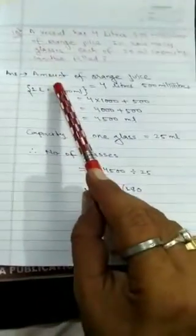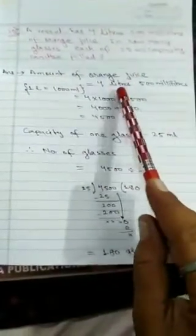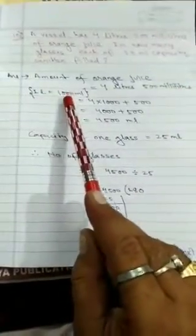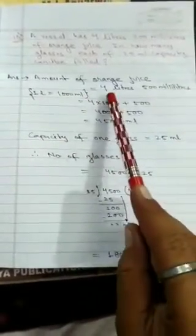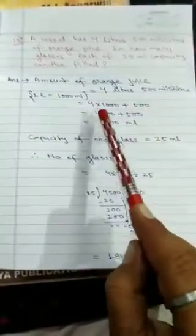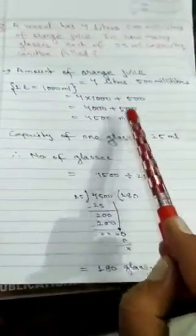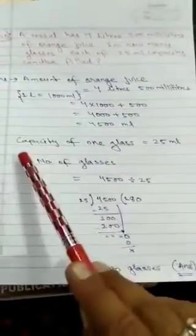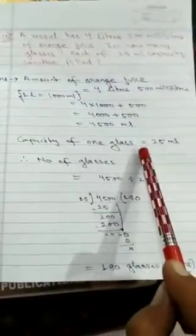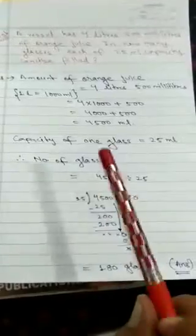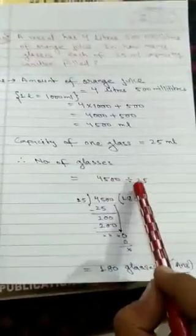Answer. Amount of orange juice, that is 4 liter, 500 milliliter. Now 1 liter is equal to 1000 milliliter. Then 4 liter will be 4 into 1000, plus 500 milliliter. That is 4000, plus 500, that is 4500 milliliter. Capacity of 1 glass is equal to 25 ml. Therefore, number of glasses will be equal to 4500, you have to divide by 25.